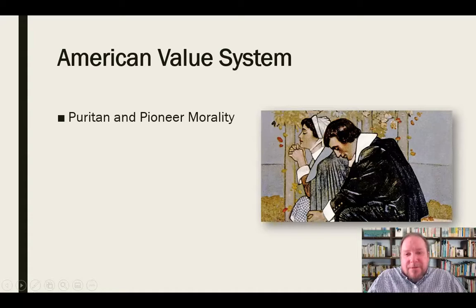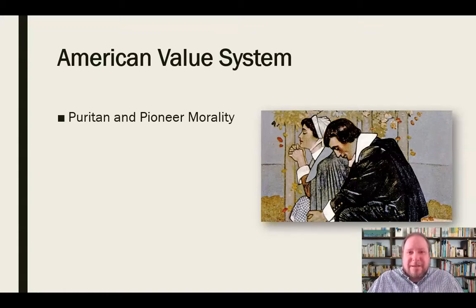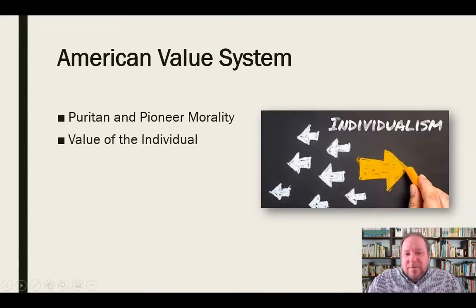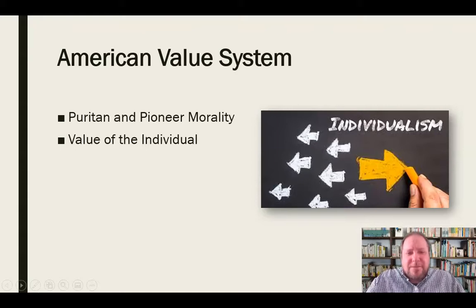The final topic is the American value system and how it plays into persuasion — both how it can be used to persuade and how it's used to persuade us. Starting with Puritan and pioneer morality: we feel connected to the sense of morality the Puritans and pioneers had, which is one reason in politics we talk so much about family values and are persuaded by that talk, even from people who don't display any sense of family values. In the United States we're also a very individualistic culture — we value the individual, somebody who goes against the grain and is willing to stand up against others. That value of the individual is a very persuasive tool.